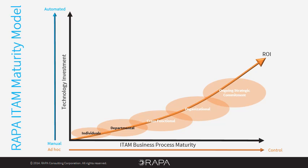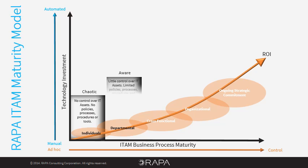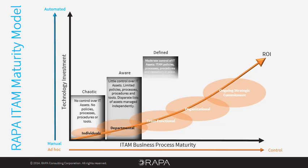Let's review the five stages of ITAM maturity. In the chaotic stage of maturity there is no control and therefore there is no useful data. Strategic decision-making cannot be made proactively at this stage. As the organization becomes aware that there is a problem, attempts are made to gain control, but these attempts are disparate and therefore incomplete — so again the data is of little value. The organization will suffer negative consequences of bad data and, as a result, will look at defining tighter processes and enforcing those. Central repositories will be established and data becomes more accurate, which has a positive impact on decision-making.